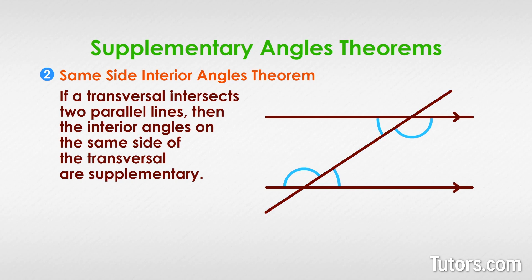Here are two lines and a transversal, with the measures for two same side interior angles shown. Since the converse of the theorem tells us the interior angles will be supplementary if the lines are parallel, and we see that 145 degrees plus 35 degrees equals 180 degrees, then the lines must be parallel.